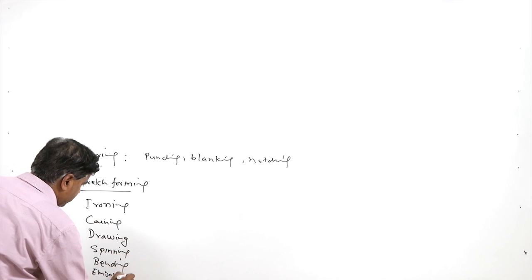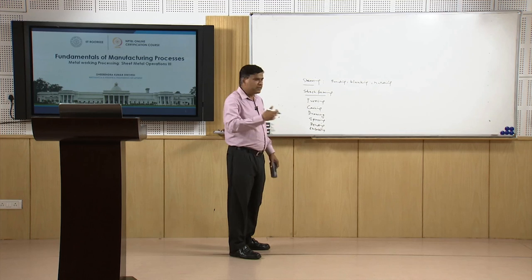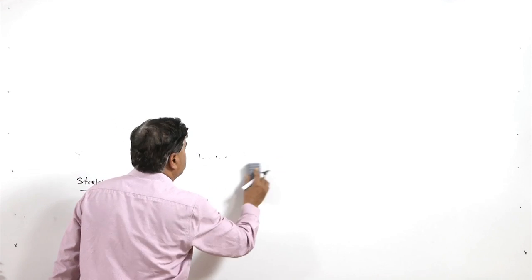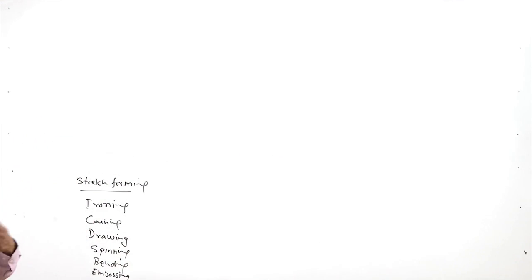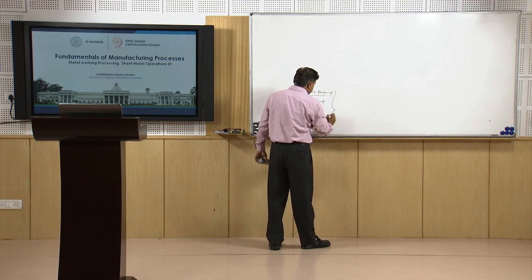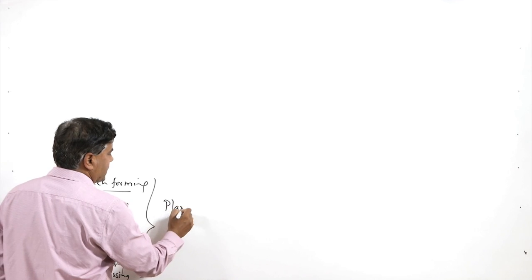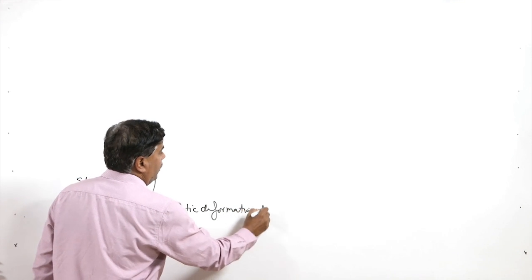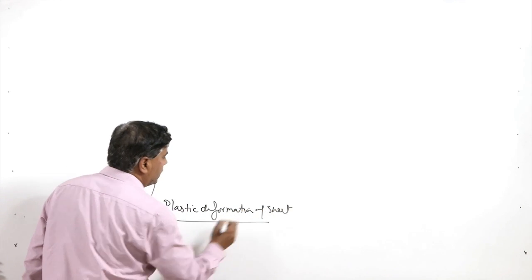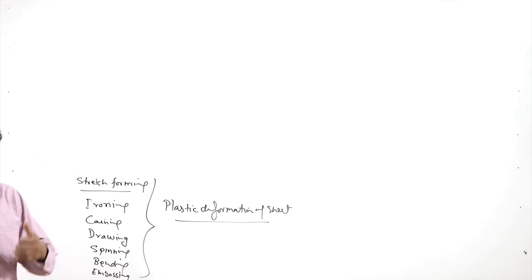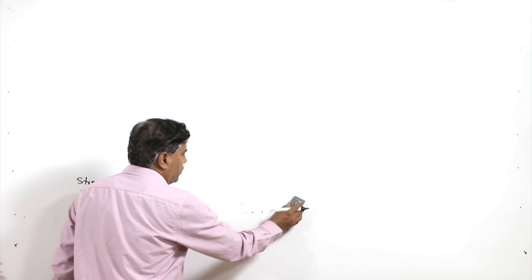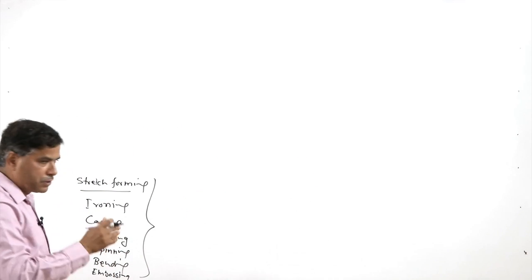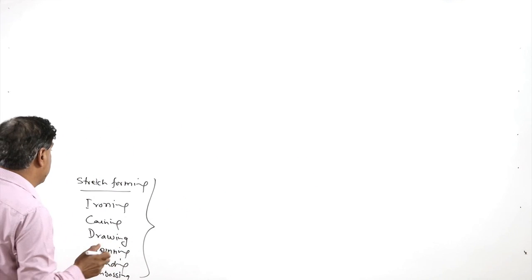These are the processes about which I will be talking about, and these are used for different purposes. Different types of stresses are developed to achieve the desired size and shape, and mostly all these processes involve plastic deformation of sheet metal. Different types of stresses are induced in order to get the desired shape to the sheet metal, so that a product of the desired shape and size can be achieved.